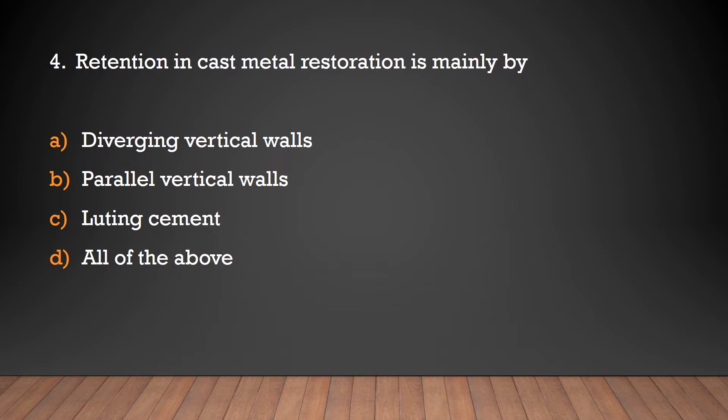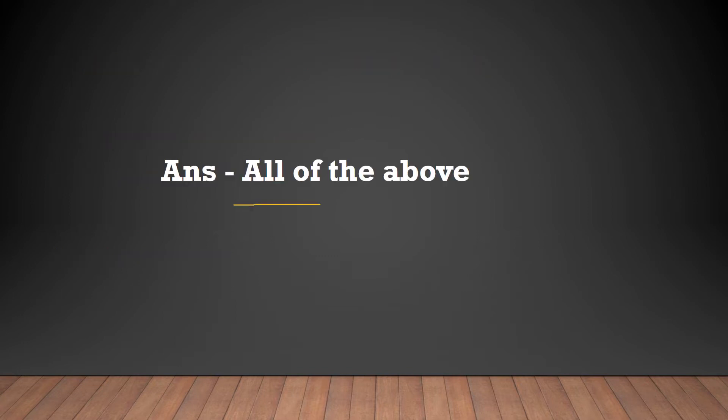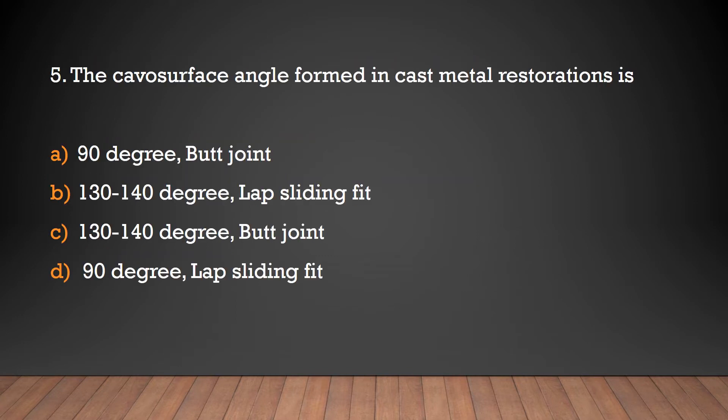diverging vertical walls, parallel vertical walls, luting cement, all of the above. All of the above. The cavosurface angle formed in cast metal restoration is: